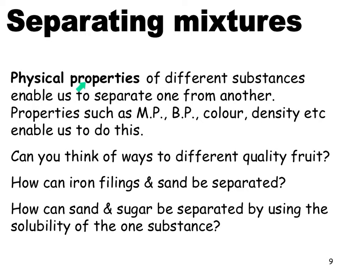Physical properties often allow us to separate different substances, such as their melting point, boiling points, color, and density. Can you think of ways of separating different quality fruit? You can hand pick them — the bad fruit on one side and the good fruit on the other. This is known as hand sorting, but it's very expensive because it requires a human being. Iron filings and sand can be separated because iron filings are magnetic and sand is not, so you can use a magnet to pull out the iron filings.